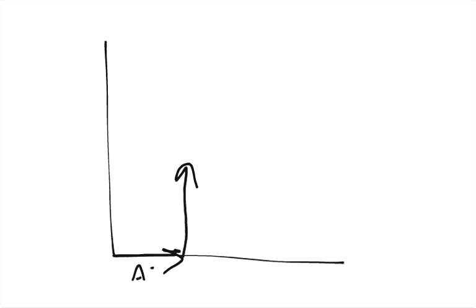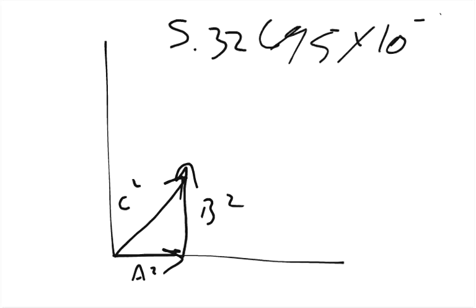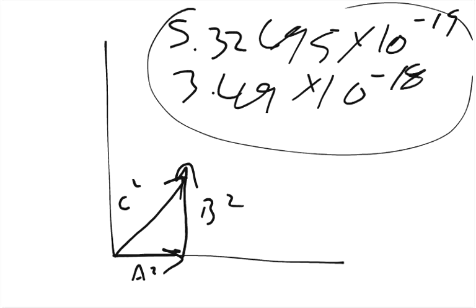And so then we can say that a squared plus b squared equals c squared. So the 7.29 times 10 to the negative 10th squared is 5.32695 times 10 to the negative 19th. And then the 1.868 times 10 to the negative 9th squared is 3.49 times 10 to the negative 18th. And so you add these together.